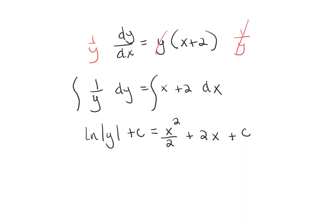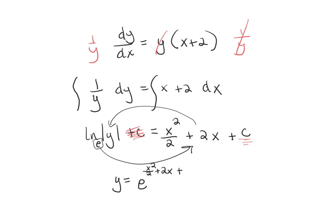As you go through these you'll get the hang of it and stop writing plus c on the left, since moving it over we still just keep one c. Now we have a logarithmic equation. Since natural log has base e, we change it to exponential form: e to the power of all of the right side equals y. So y equals e to the power of x squared over 2, plus 2x, plus c.